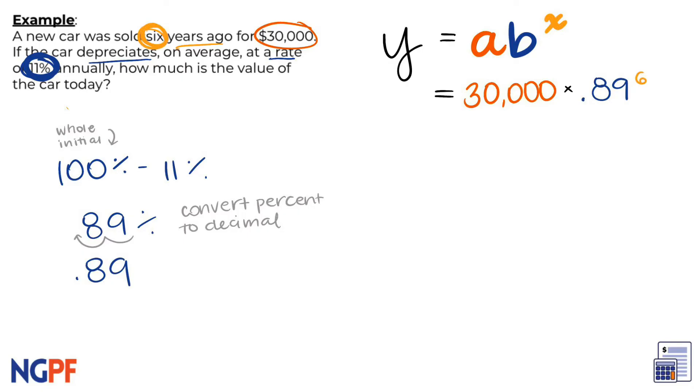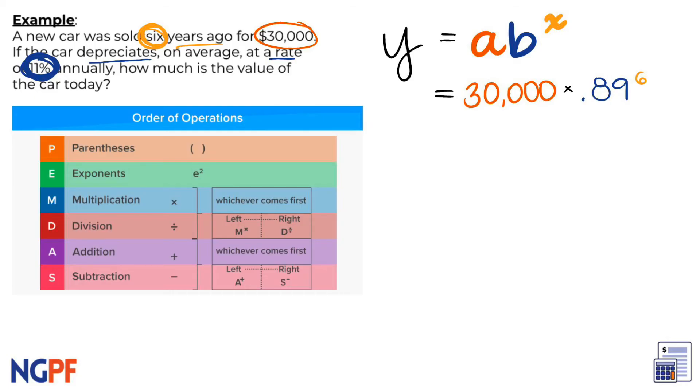Now that we have accurately identified and substituted our variables into the formula, we can now use order of operations to calculate. According to order of operations, we must first carry out the exponent, so we can just drop and keep the 30,000 for now. .89 raised to the sixth power is equal to .4969813.